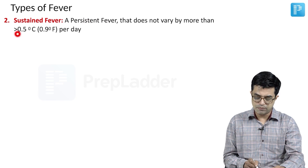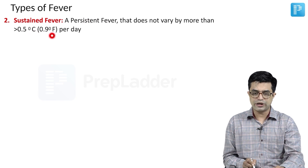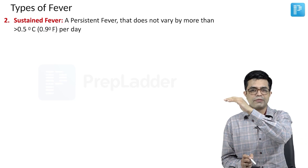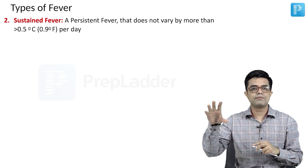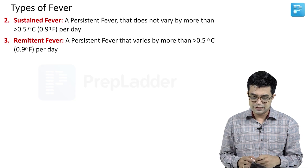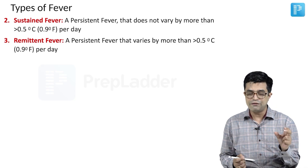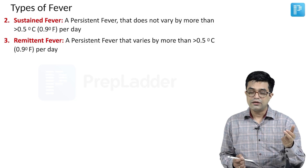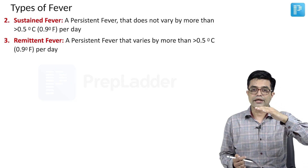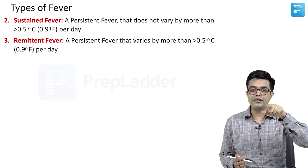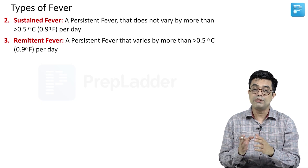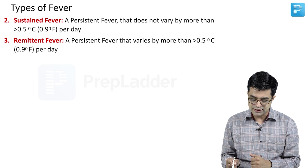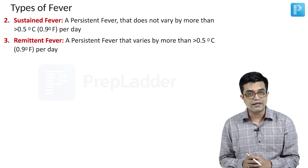Sustained fever does not vary by more than 0.5 degree Celsius or 0.9 degree Fahrenheit per day — it remains within a certain normal limit. Then there is remittent fever. If you look at the graph, it will look a bit like intermittent fever — it remains above the baseline, but the variation in body temperature throughout the day will be more than 0.5 degree Celsius per day. That is called remittent fever.